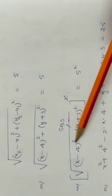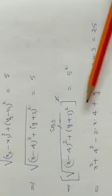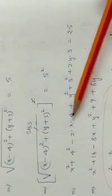Squaring on both sides, root and square get cancelled. (x minus 4) whole square: x square plus 16 minus 8x. (y plus 3) whole square: y square plus 9 plus 6y. This equals 5 square, which is 25.